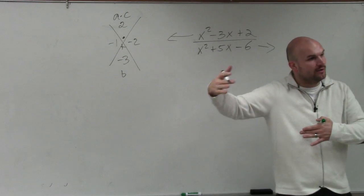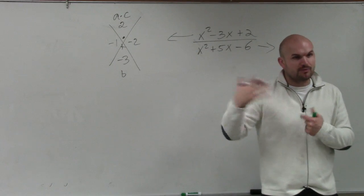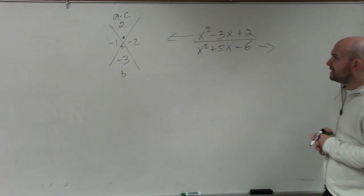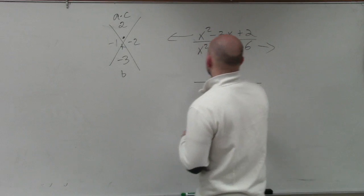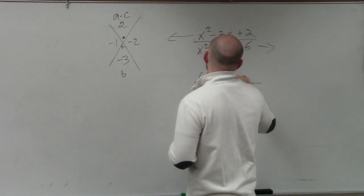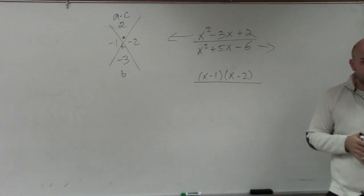If a was not equal to 1, we would use the box or the grouping technique, which we talked about, which I'll go over again later in the class, or at least in my next example. So therefore, I can rewrite this one as x minus 1 times x minus 2. That is the factored form.